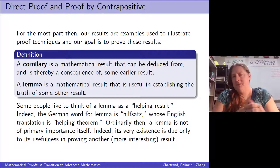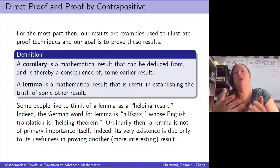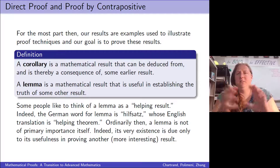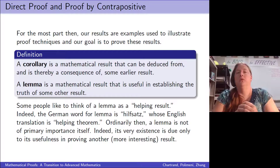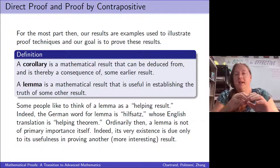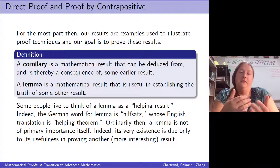There are a couple of other words that may pop up from time to time. One of them is a corollary. A corollary is basically a result of a theorem — a pretty direct result. Usually you simplify the domain down a little bit, or it's a direct example from the theorem. Corollaries come directly from theorems, so they're not a theorem themselves, but they're a true result that might be helpful.